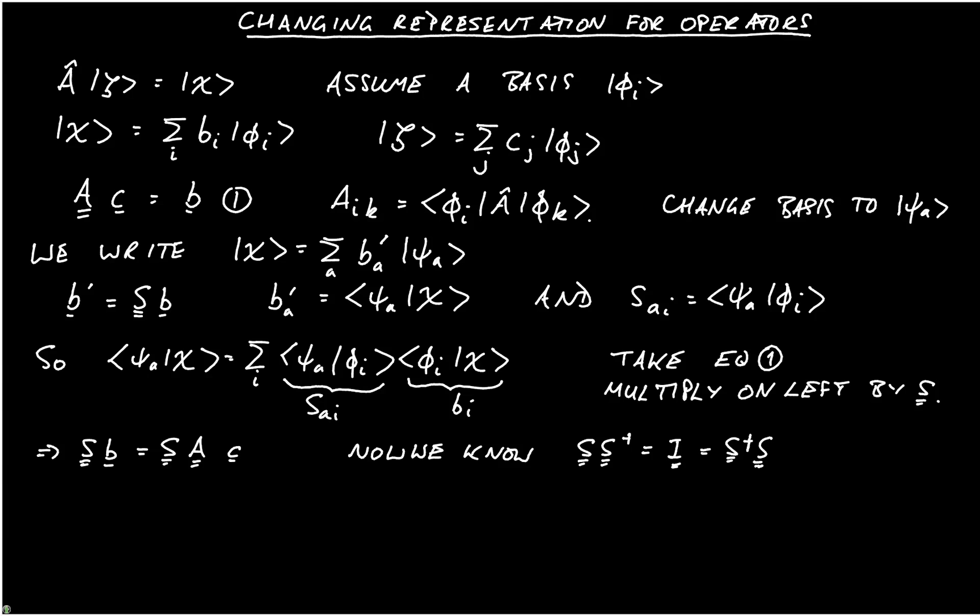And what we will do is we will insert a copy of the identity matrix in between A and C. So we see that we have S acting on b is equal to S A, and then I'll put this in brackets, S dagger S acting on C. And we've done nothing here because we've simply inserted an identity operator.